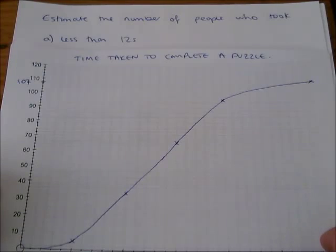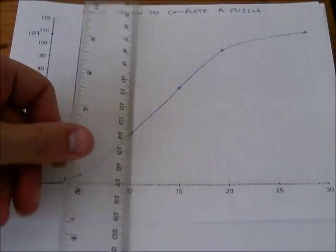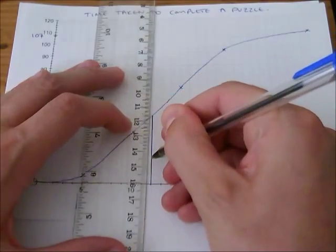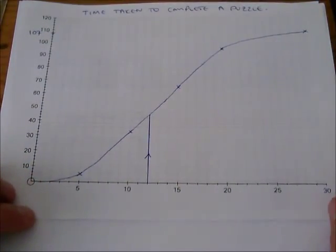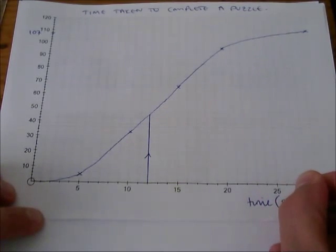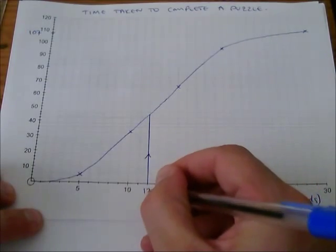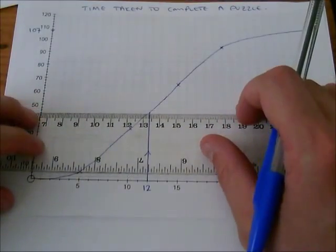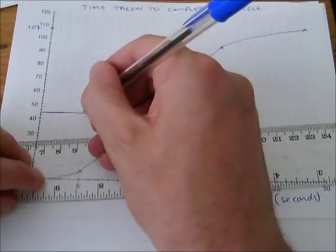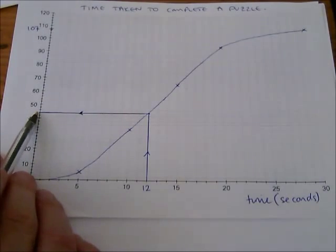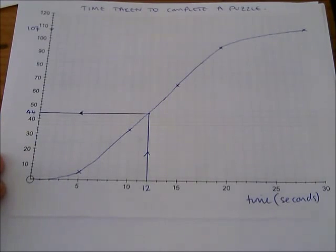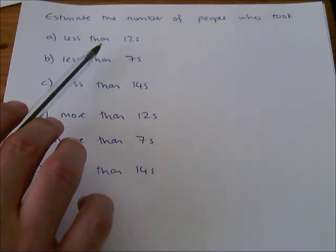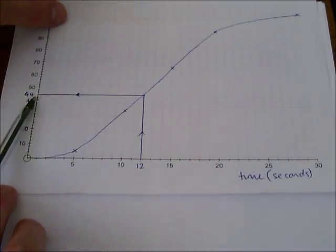In order to do this we need to look at 12 seconds. Let's draw a line up from 12 seconds. I haven't labeled my axis so this one along here is the time taken in seconds. So I've gone to 12 seconds, drawn a line up to the cumulative frequency graph, and then simply by reading off that value, I can tell that there were 44 people who took less than 12 seconds.